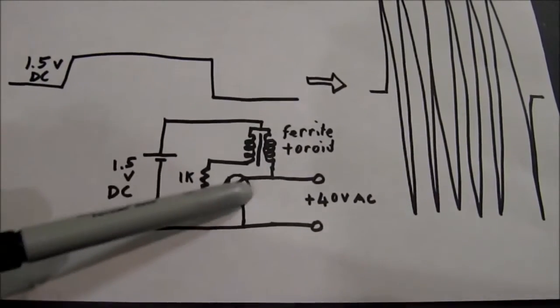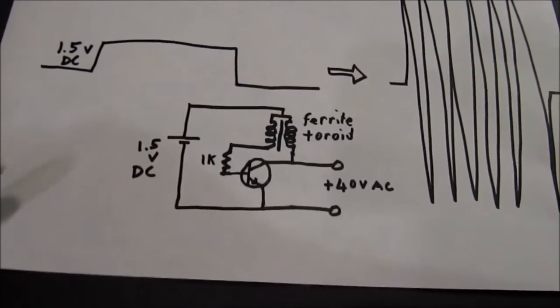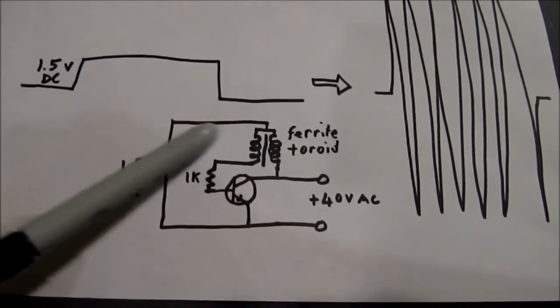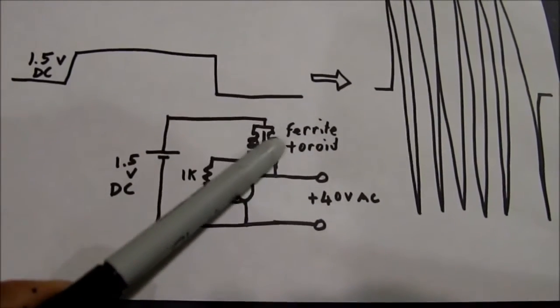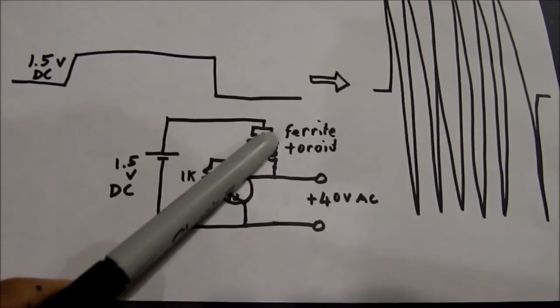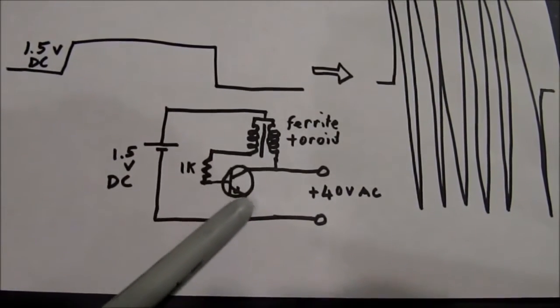Once the transistor is turned on, the electricity can then flow to this other leg of the coil here, and so it will flow through this leg of the coil, through the transistor, and back to the battery.